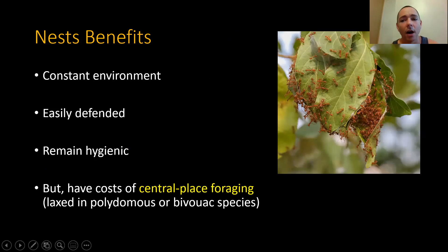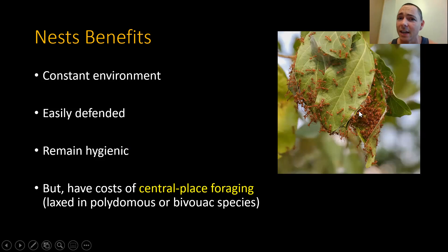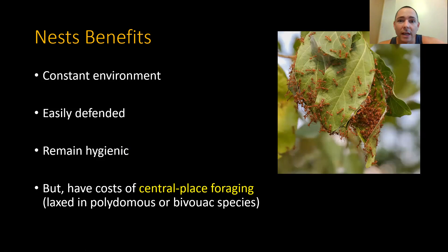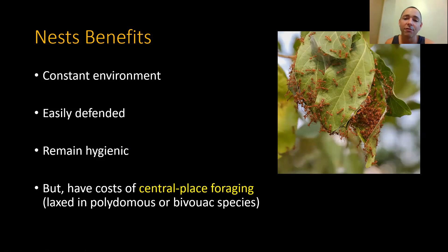Weaver ants weave leaves together using silk into structures that look like a spider might live inside, but it's actually just a colony of ants. These species tend to be highly polydomous — once you see one weaver ant colony nest, there are often many in the same area with ants running back and forth between them. When the living tree itself determines how big a specific nest can be, large colonies resolve this by having many, many nests nearby, sometimes consuming the whole crown of a large tree.